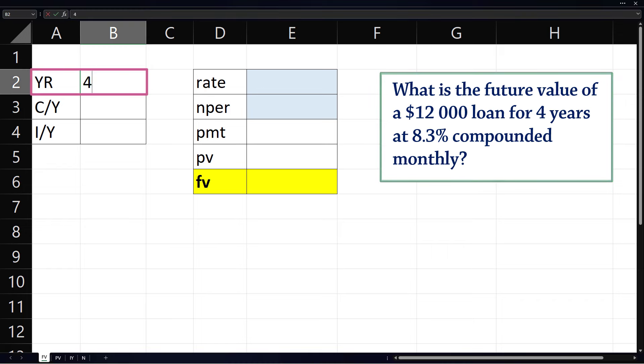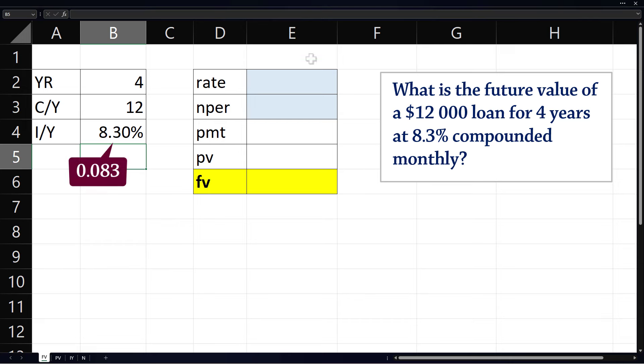We have 4 years, we're compounding 12 times per year, and the nominal interest rate is 8.3% per year. The percent sign must be included here, otherwise you can input .083.